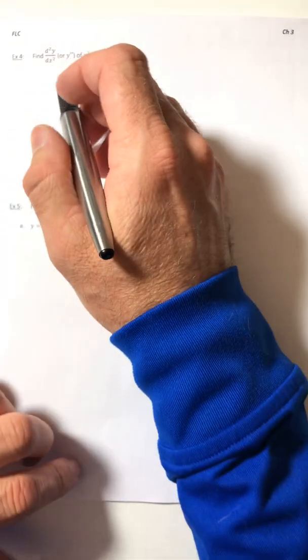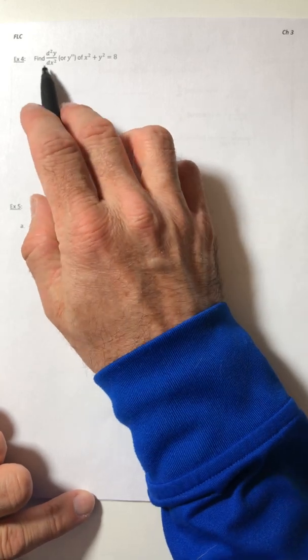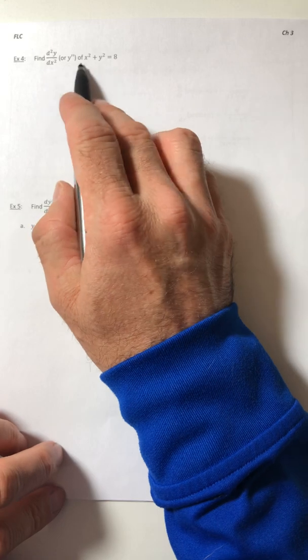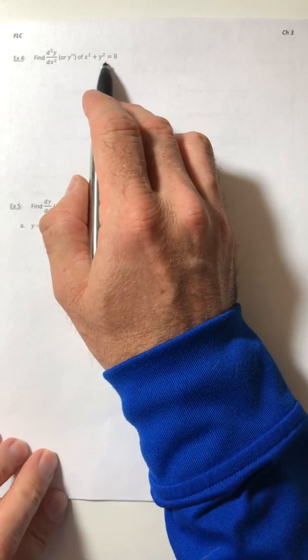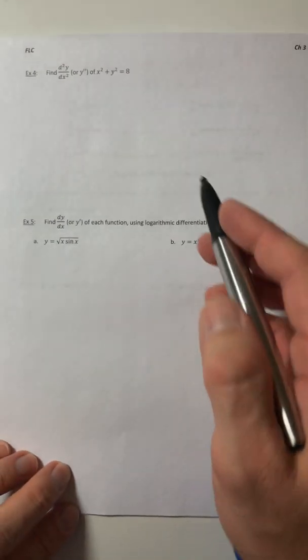All right, let's pick up where we left off. So we're still going to use implicit differentiation, but look what we have to find now. We have to find the second derivative of this equation right here. So if we want the second derivative, we need to find the first derivative.